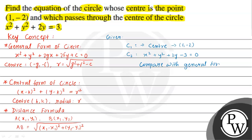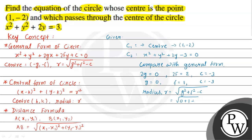Comparing with the general form, the coefficient of x is 2g, and in C2 the coefficient of x is 0, so g equals 0. The coefficient of y is 2f, giving f equals 1. The constant term c equals −3. So the radius of C2 is square root of g squared plus f squared minus c, which is square root of 0 plus 1 plus 3, giving radius equal to 2.